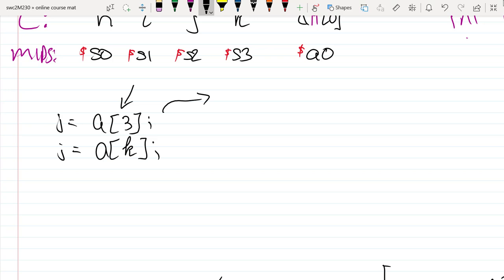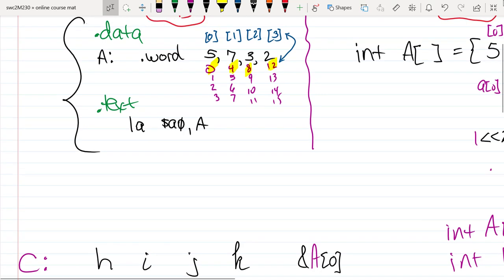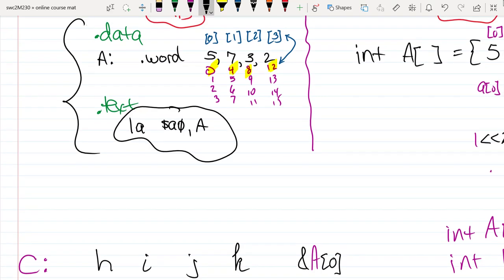Since we know the index is 3, we can just multiply the index by 4 to figure out how far away that element is from the beginning of the array. So if I want to access a sub 3, what I'll do then is just multiply the index by 4. Throughout this I'm assuming that the address of the array has been loaded into a sub 0 register.